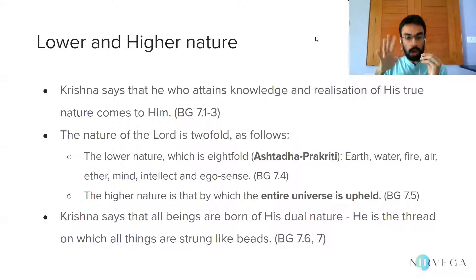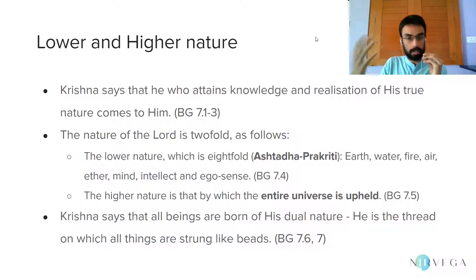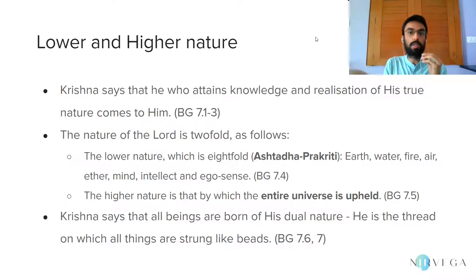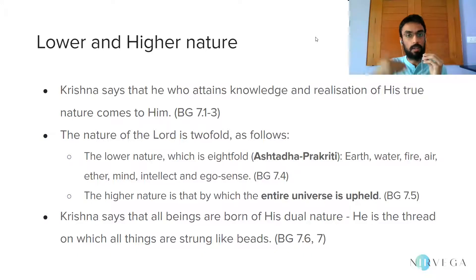The higher nature is that by which the entire universe is upheld, apart from the lower nature. Krishna here is referring to what in Vedanta is called pure consciousness. The Aitareya Upanishad in its last chapter speaks of Prajnanam, which we understand to be Brahman, the ultimate reality — pure consciousness which acts as the substratum of the entire universe. Everything is said to be established in this Prajnanam. When Krishna speaks of his higher nature, he refers to this pure consciousness, this Satchitananda that Vedanta speaks of.